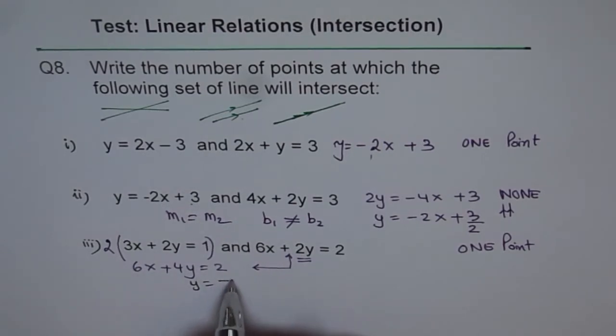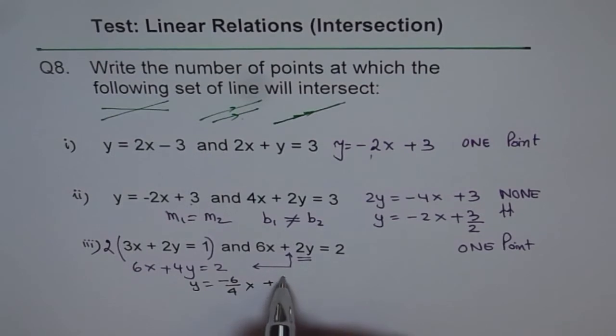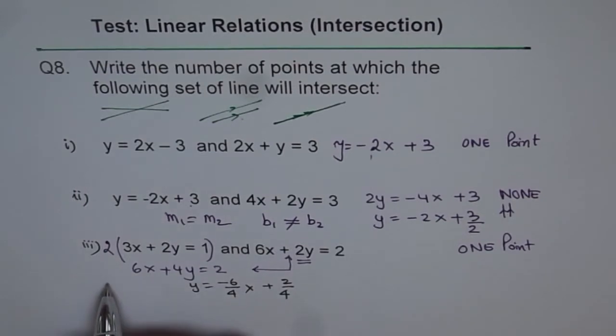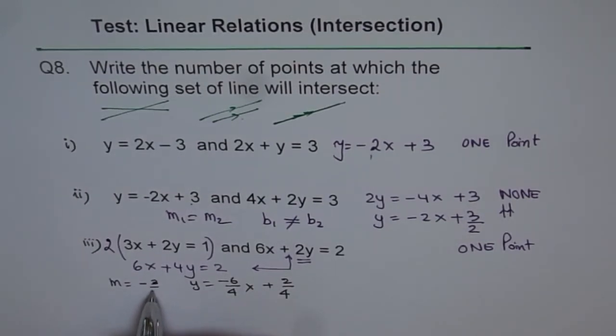So the slope of the first line reorganizing will give you y equals 2. We'll take this here. So minus 6 over 4x plus 2 over 4. And for the second line, so we can write this slope in simplified form as m equals minus 3 over 2.